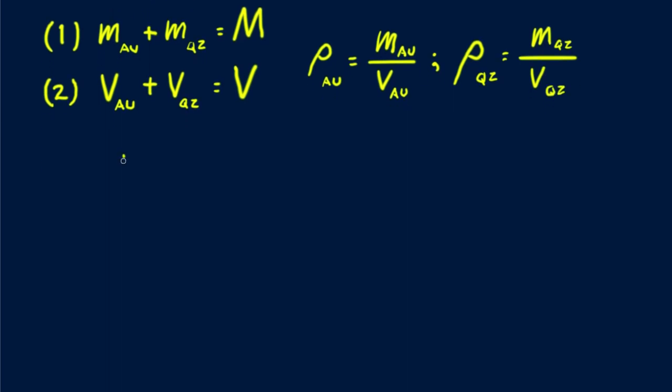Let's continue. The mass of gold will be equal to the difference in the mass of the chunk and the mass of the quartz. And expressing the mass of quartz in terms of its density, do you see that the mass of quartz is equal to the density of quartz times its volume? And we know from equation two that the volume of quartz is equal to the volume of the chunk minus the volume of gold. And for the volume of gold, can't we substitute its mass divided by its density? Are you following this?